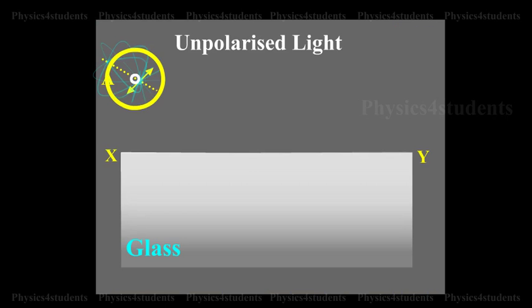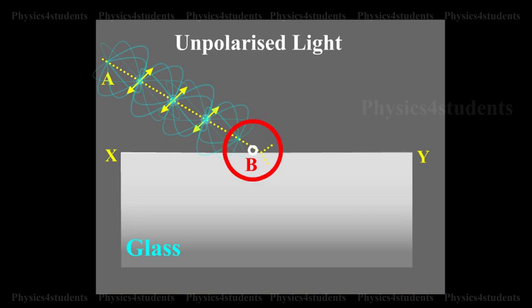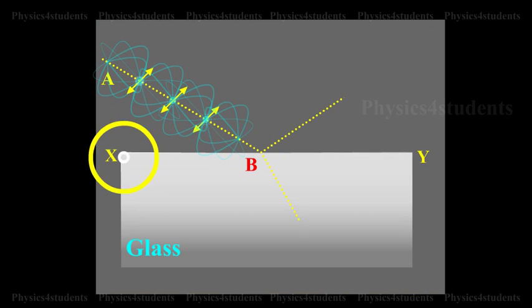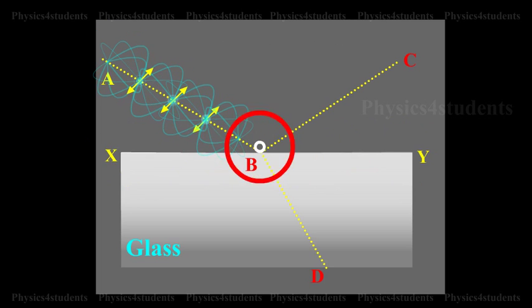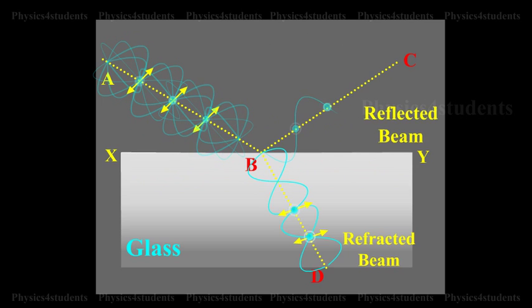Consider a beam of unpolarized light AB, incident at any angle on the reflecting glass surface XY. Vibrations in AB which are parallel to the plane of the diagram are shown by arrows. The vibrations which are perpendicular to the plane of the diagram and parallel to the reflecting surface are shown by dots.